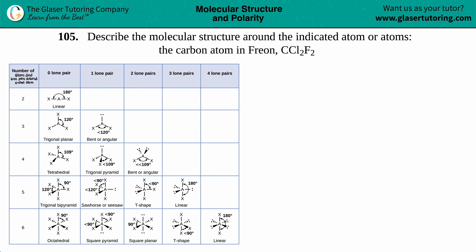Number 105, describe the molecular structure around the indicated atom or atoms. We have to find the molecular structure for the carbon atom in Freon, which is CCl2F2. Alright.